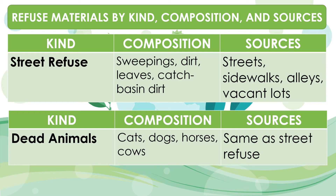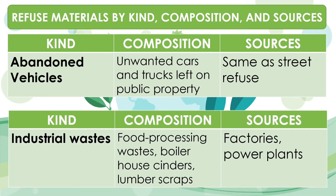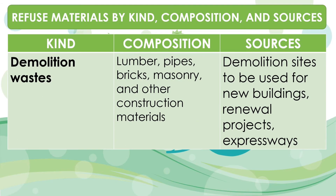Next is dead animals — these are cats, dogs, horses, and cows that we can see on the street. The next one is the abandoned vehicle, such as unwanted cars and trucks left on public property. The sources are the same as street refuse. Next is industrial waste. These are food processing waste, boiler house cinders, and lumber scraps. The sources are from factories and power plants. Next is demolition waste. These are lumber, pipes, bricks, masonry, and other construction materials found in demolition sites to be used for new buildings, renewal projects, and expressways.